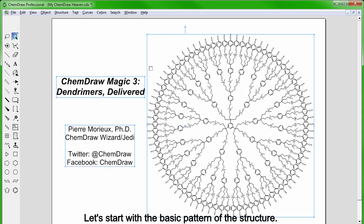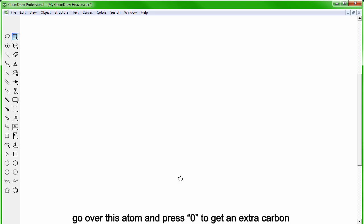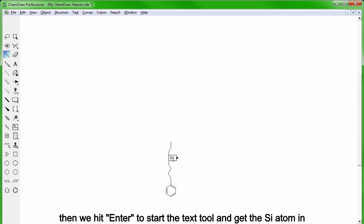Let's start with the basic pattern of the structure. We start with a benzene ring. Go over this atom and press 0 to get an extra carbon. Then we take the chain tool to add a few other ones. And then the single bond tool that we use to orient the last one up. We can go over this atom and then press 9, which will sprout 2 carbon atoms. Then we hit enter to start the text tool and get the silicon atom in. Finally, we go over this one and press O to get an oxygen.